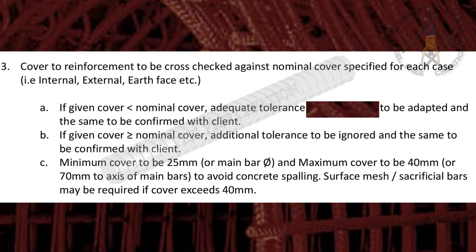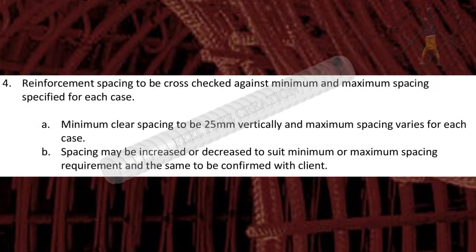Minimum cover to be 25 mm or main bar dia, and maximum cover to be 40 mm, or 70 mm to axis of main bars, to avoid concrete spalling. Surface mesh or sacrificial bars may be required if cover exceeds 40 mm.